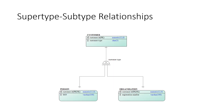For example, if you have to represent different types of customers in a data model — say individual customers and customers that are other organizations — we can define the customer entity as a supertype, and individual customer or person as a subtype. Another subtype in this scenario is organization.